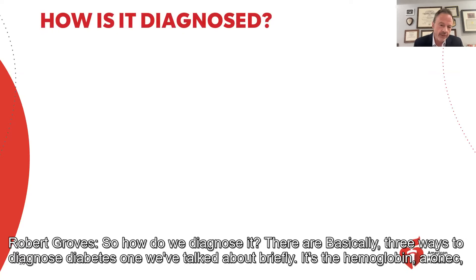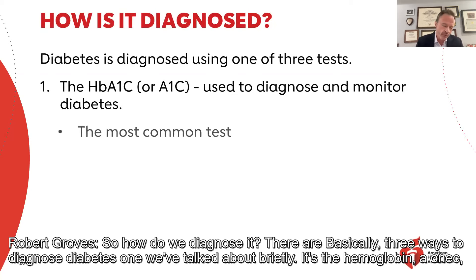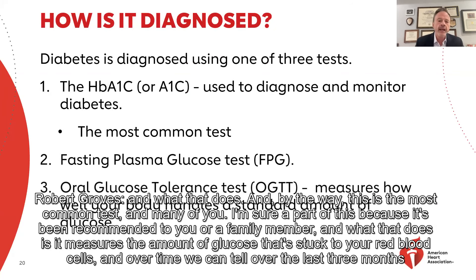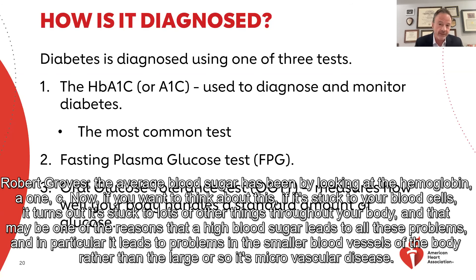How do we diagnose it? There are basically three ways to diagnose diabetes. One we've talked about briefly is the hemoglobin A1c — this is the most common test and many of you have heard of it. What that does is it measures the amount of glucose that's stuck to your red blood cells. Over the last three months, we can tell what the average blood sugar has been by looking at the hemoglobin A1c. If it's stuck to your blood cells, it turns out it's stuck to lots of other things throughout your body — which may be one reason that high blood sugar leads to problems, particularly in the smaller blood vessels of the body — microvascular disease.